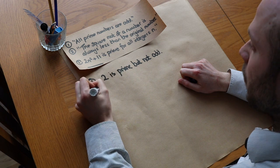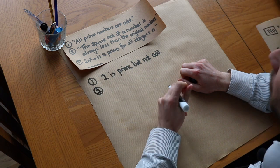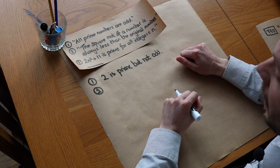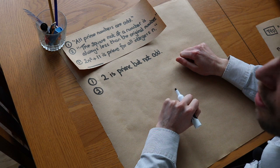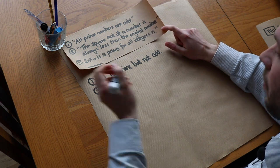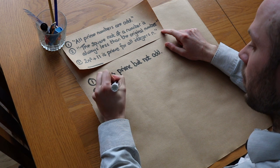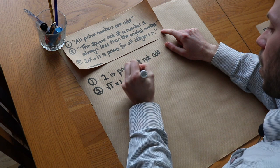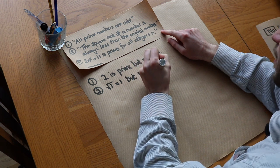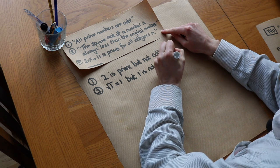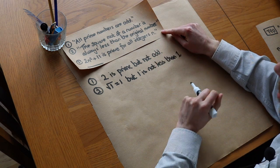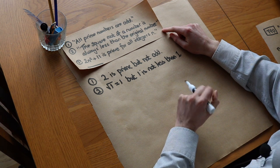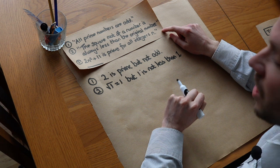For the second statement, we need a number where the square root is not less than the original. Any number between 0 and 1 will work as a counterexample. For example, the square root of 1 is 1, and 1 is not less than 1. You could also use 0 — the square root of 0 is 0, which is not less than 0 — or even a quarter, where the square root is one half, which is actually bigger than the original number.